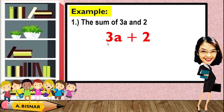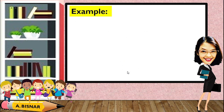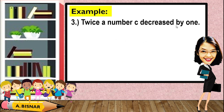However, there is also an arithmetic operation here which is multiplication, because this means the product of 3a. Another example: the product of 7b, which can be written as 7b. This is an algebraic expression — a combination of a number and a variable — and the present operation is subtraction, with multiplication also present. Next, twice a number c decreased by 1, which can be written as 2c minus 1. It is a combination of numbers and variables and the present operations are subtraction and multiplication.